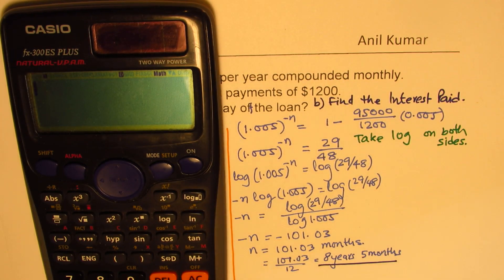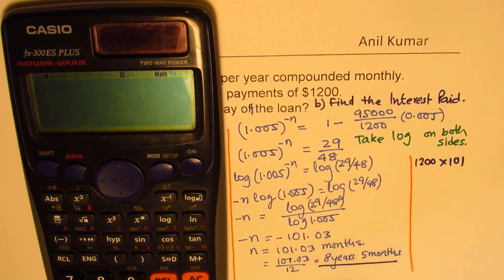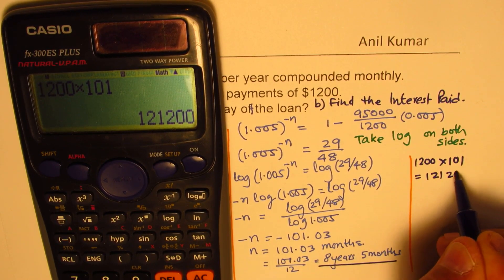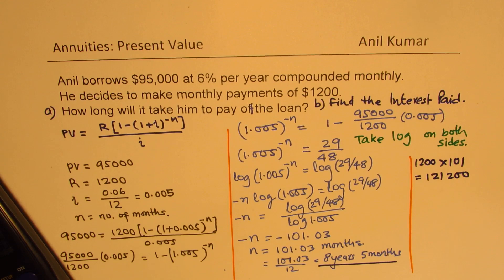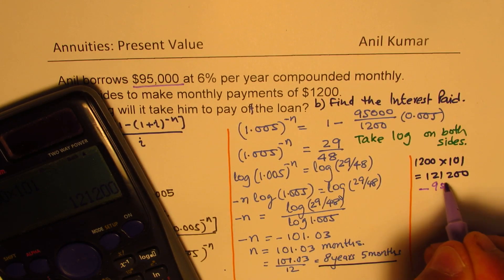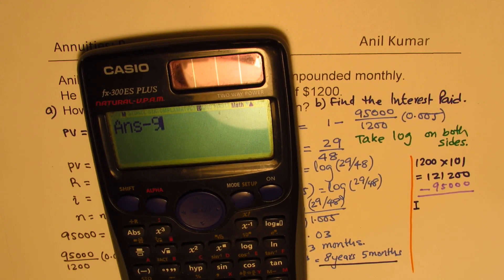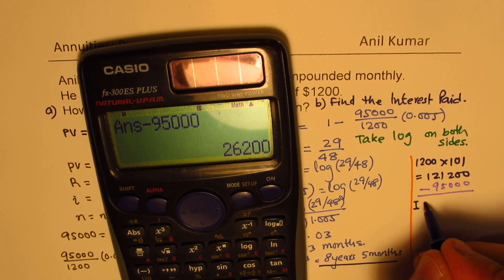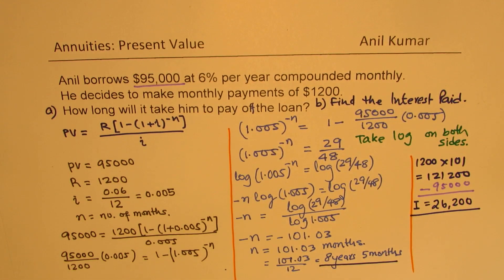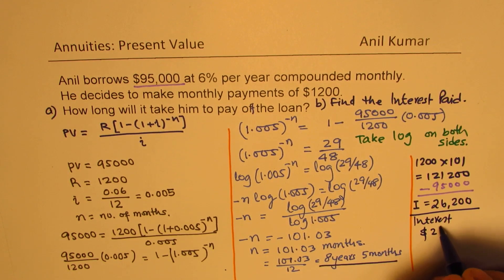So even taking 101 months, what we will do is multiply 1,200 by 101, which equals $121,200. The actual principal payment was only $95,000. So if we take away $95,000 from $121,200, we get the interest paid, which is $26,200. So over this period of time, the total interest paid is $26,200.